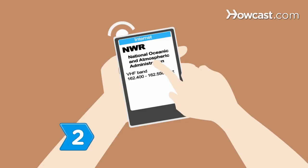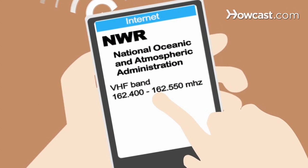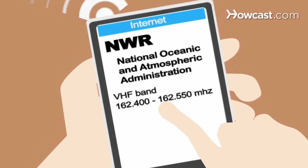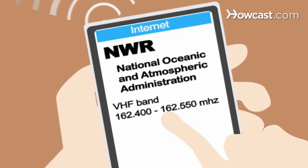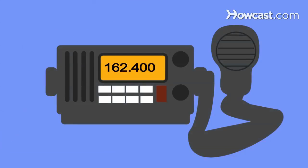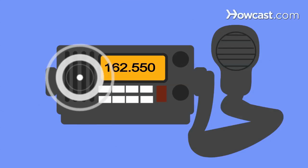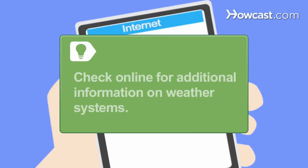Step 2. Go online to find the frequency for your local transmitter of the National Oceanic and Atmospheric Administration's Weather Radio All Hazards, or NWR, then listen for updates about severe weather nearby. Check online for additional information on developing weather systems.